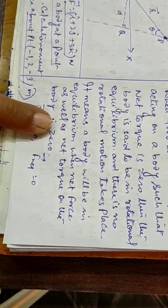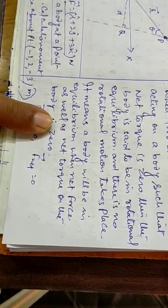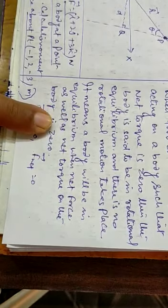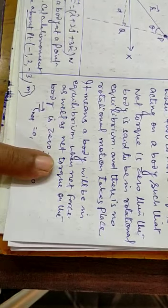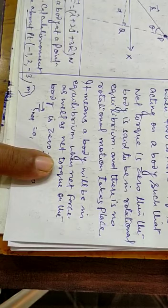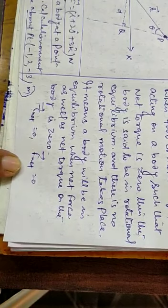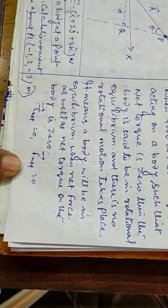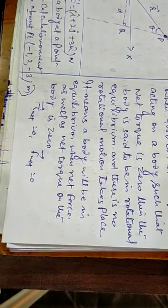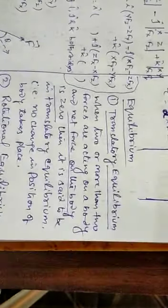If the net force is zero, then it will be translatory equilibrium. If the net torque is zero, it will be rotational equilibrium — but the body will still be moving translationally. If both the net force and net torque are zero, then the body will be in complete equilibrium.